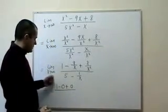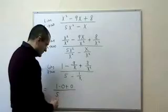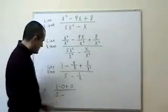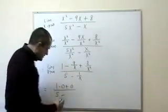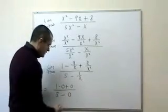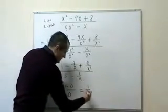On the bottom, the limit as x goes to infinity of 5, the limit of a constant, is the constant, minus 1 over a really big number, which is very small. So I get my limit to be 1 over 5, or 1 fifth.